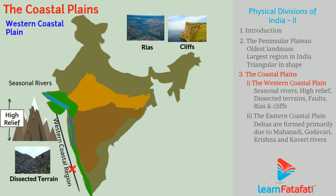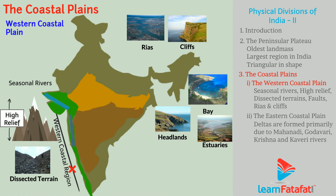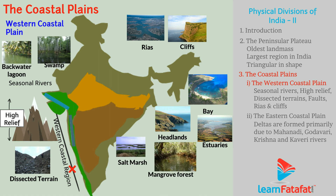The coast has a number of bays, headlands, estuaries — that is, the tidal mouth of a large river — backwaters, lagoons, swamps, salt marshes, mangrove forests, and clean and beautiful beaches.